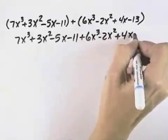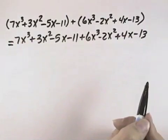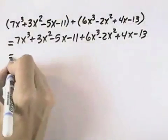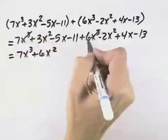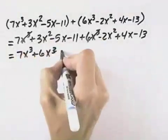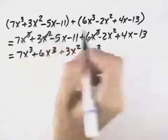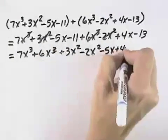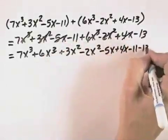Once we've done that, we can see each of our individual terms. From there, what we want to do is group like terms so that we can combine like terms. I'm going to group the 7x cubed and the 6x cubed together, and I'll cross them off as I do this so I don't miss any. Then I want to group the 3x squared and the minus 2x squared together, so I can cross those off. Then I have two x terms: a minus 5x and a plus 4x, so I can group those two together. And finally, minus 11 and minus 13 can be grouped together.